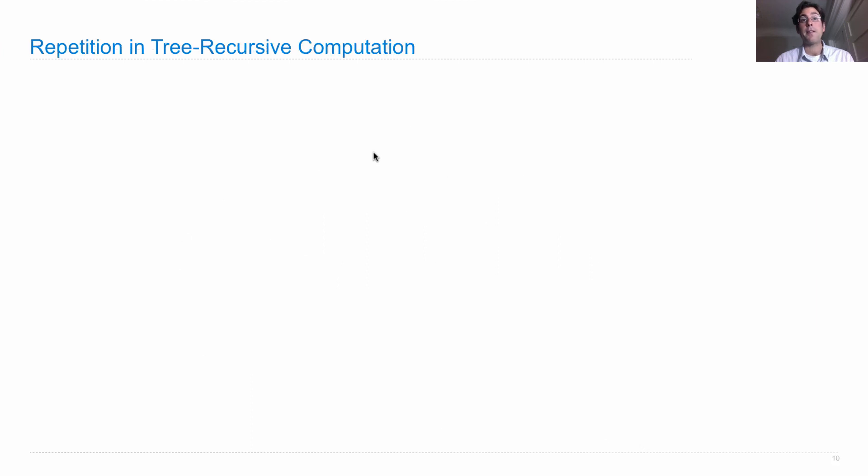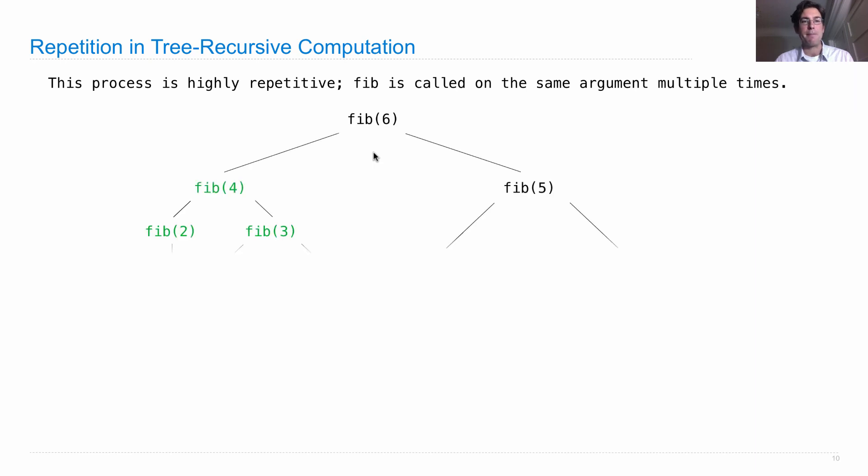Okay, so one thing you may have noticed is that within this tree recursive computation, there is quite a bit of repetition. In fact, it's highly repetitive. Fib is called on the same argument multiple times. Not just the base cases, but higher up in the tree.